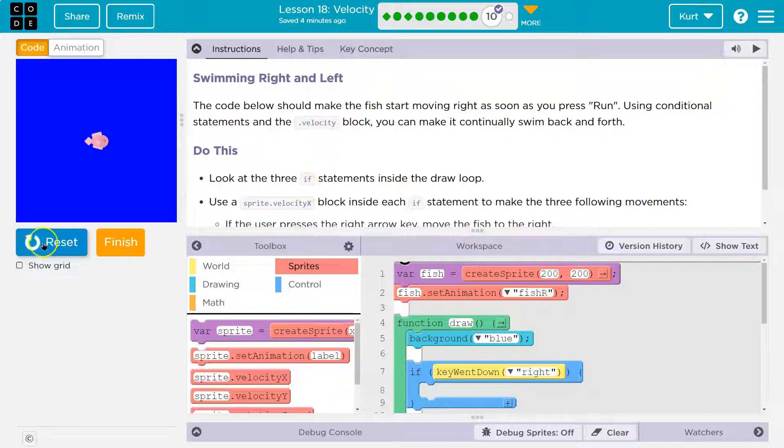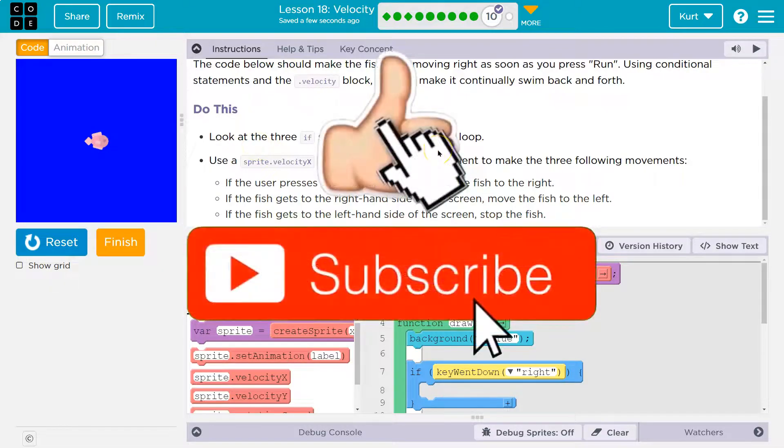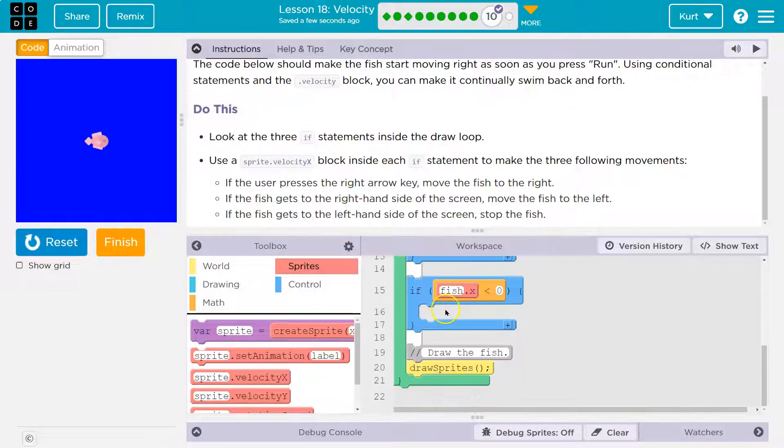So this is similar to what we've seen before. Right now it just shows me this fish. Do this. Look at the three if statements. Oh, there's three of them inside the draw loop. Here's our draw loop. One if, two ifs, three ifs.